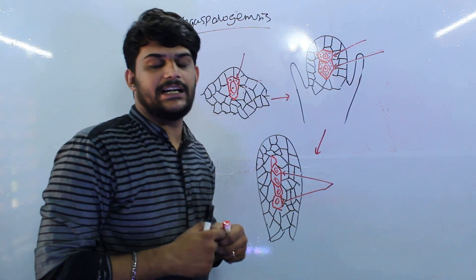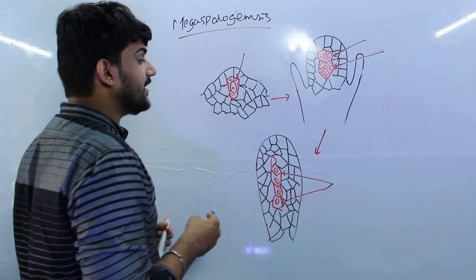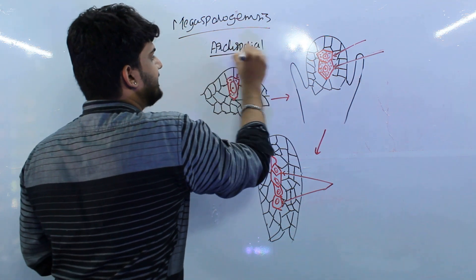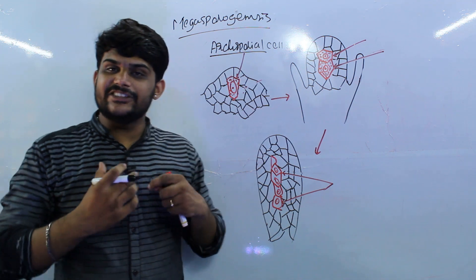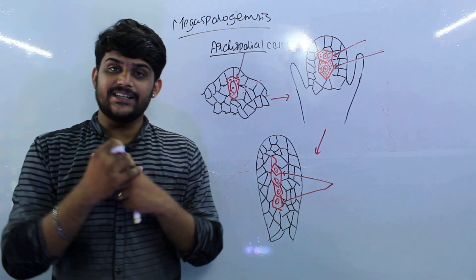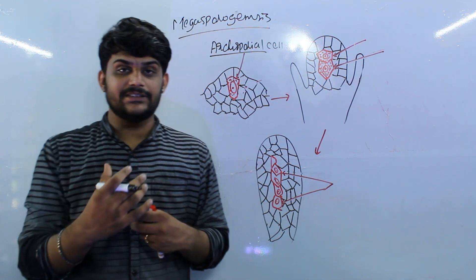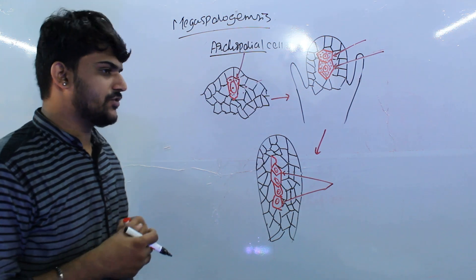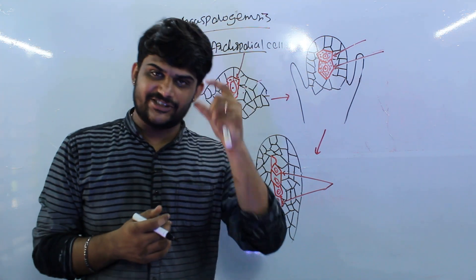In between the hypodermal cells, this new cell is generated and is known as the archesporeal cell. The archesporeal cell is larger in size; it accumulates a larger amount of cytoplasm, and its nucleus becomes bigger compared to other cells. The cell also looks bigger due to cytoplasm accumulation. This is the initial cell for the development of the Megaspore mother cell.